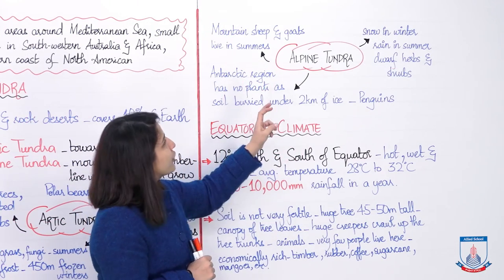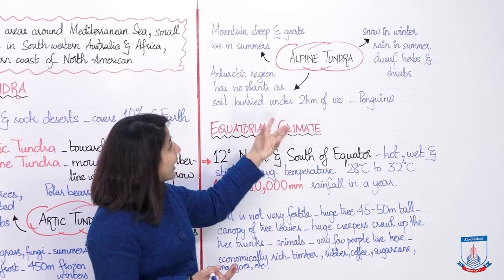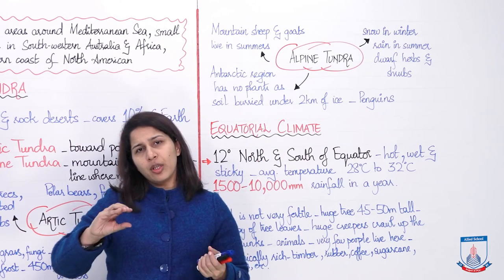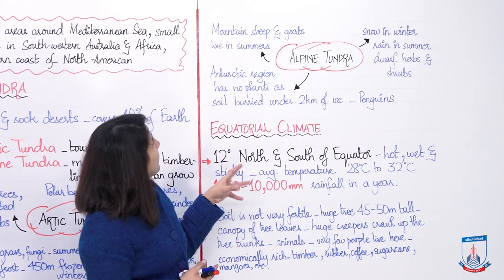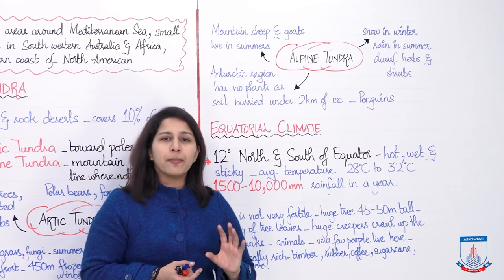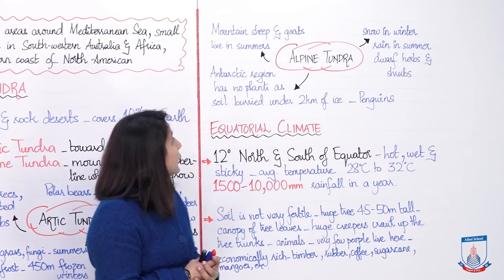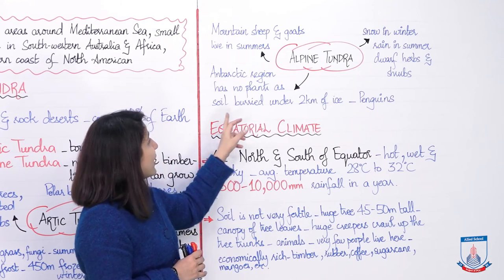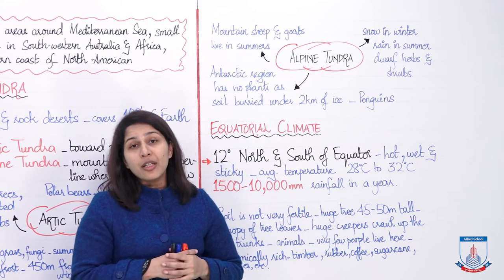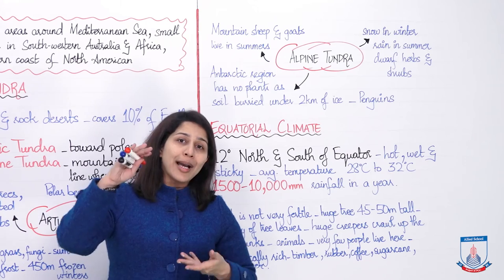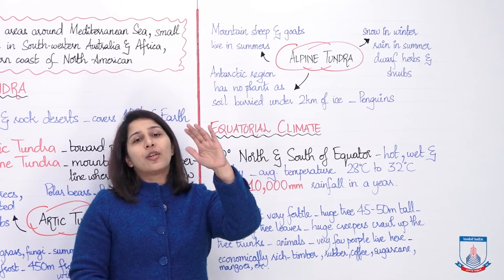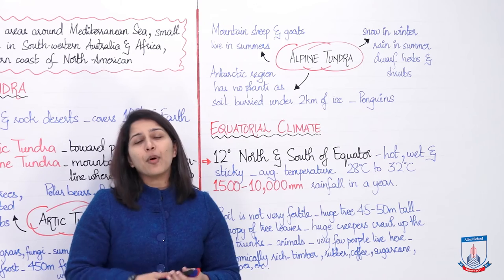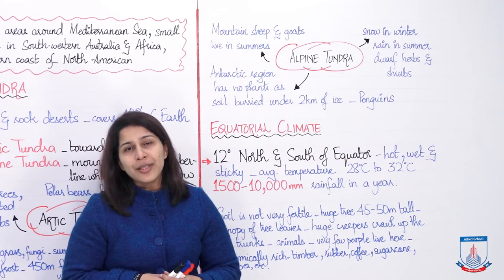The second type is alpine tundra. Alpine tundra mein snow is there in winters, but it also has some amount of rain in summers. There are only dwarf herbs and shrubs — chote chote herbs aur paude. Mountain sheep and goats can live there in summers only. In the Antarctic region, there are no plants at all — because the soil is buried under more than two kilometers of ice. The only animal that can live there is penguins.